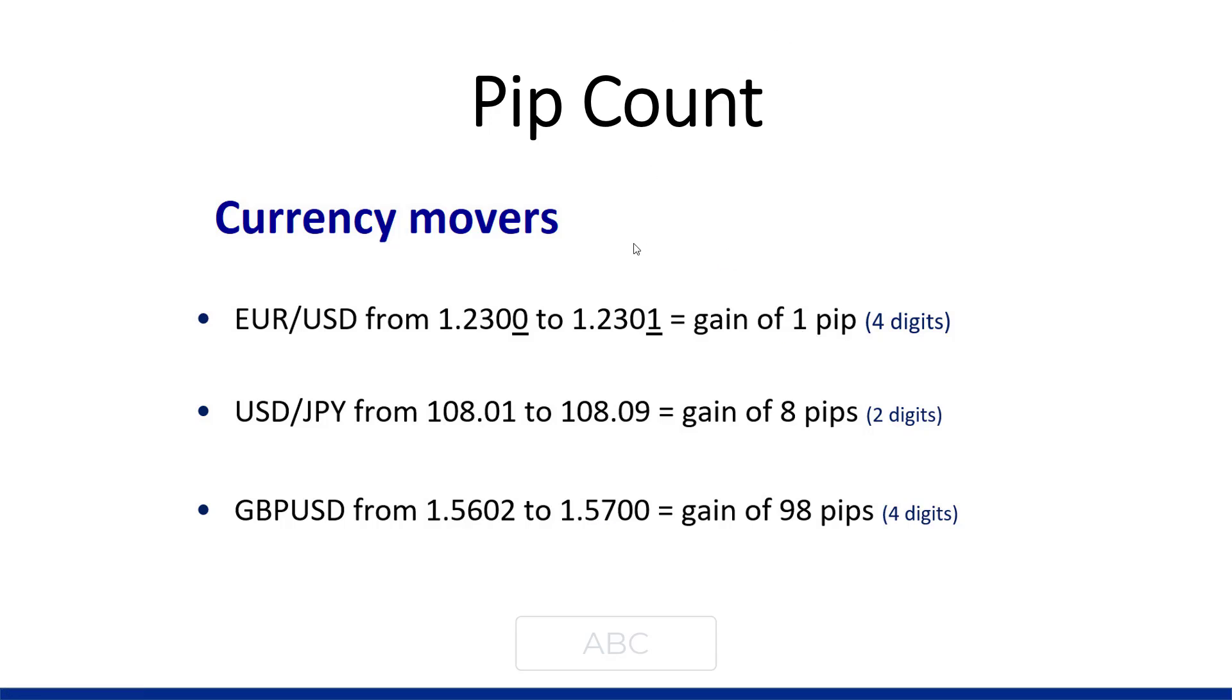Let's look at pip movement: if your market moved 20 pips and you had a position size of £5 per point, that's £100 profit, or £100 loss if you were stopped out. A stop is what you place with your broker to exit the trade if it goes against you. Remember, you're going to have losing trades - even with 50% losers you can still make money. Of course we want our win rate up and lots of winning trades, but we want big winning trades. If something moves 50 pips per day at £30 per point, that's £1,500.